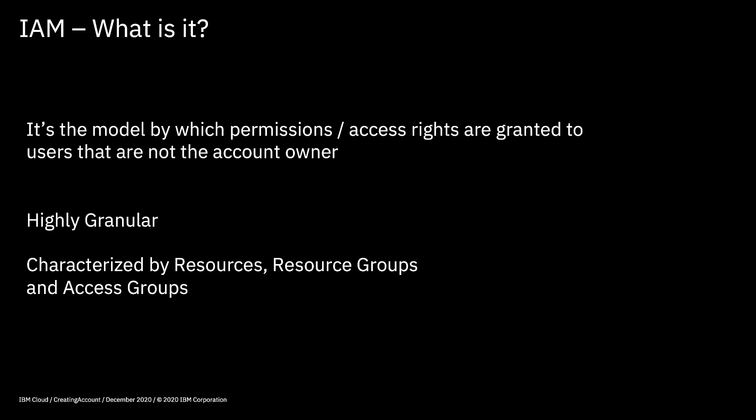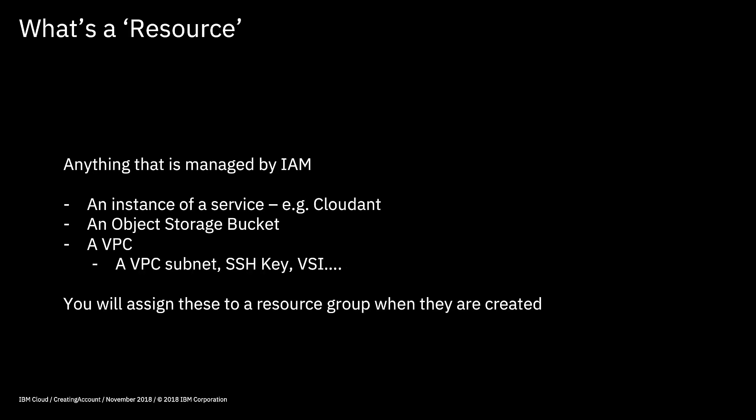IAM is actually characterized by resources, resource groups, and access groups. So whenever you hear people talking about any of those three things, what they're talking about is IAM or Identity and Access Management. A resource is basically anything that's managed by IAM — so that could be something like an instance of a service, an object storage bucket, or any of the components that make up a virtual private cloud. Pretty much anything that you create within IBM Cloud could be classified as a resource and managed under IAM.